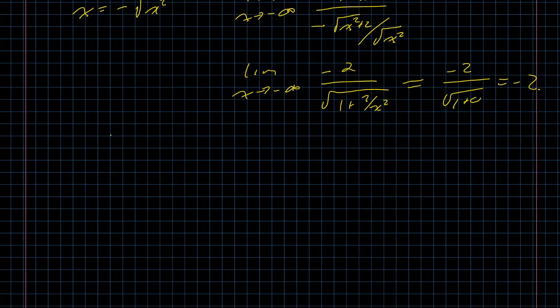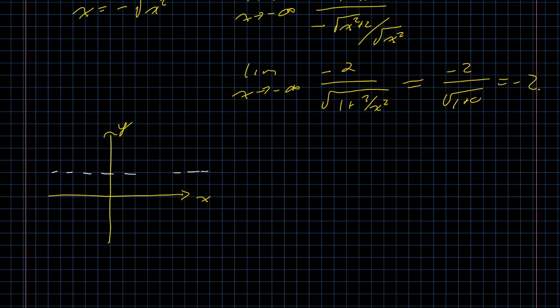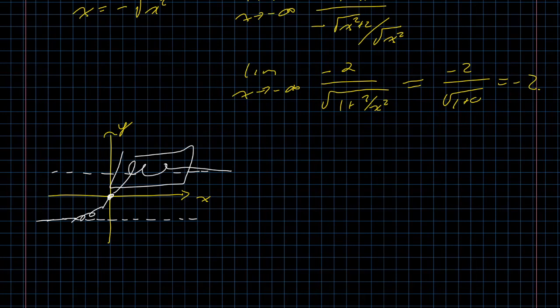Summarizing what we have so far and sketching in the coordinate axes: we know there are horizontal asymptotes at y equals 2 and y equals negative 2. We have our zero at the origin. The function is continuous everywhere. So it's going to do its thing — going along the lower asymptote, increasing through the origin, and tapering off toward the upper asymptote. What it looks like in between is still a question, and that's where knowing the extreme values will become helpful.